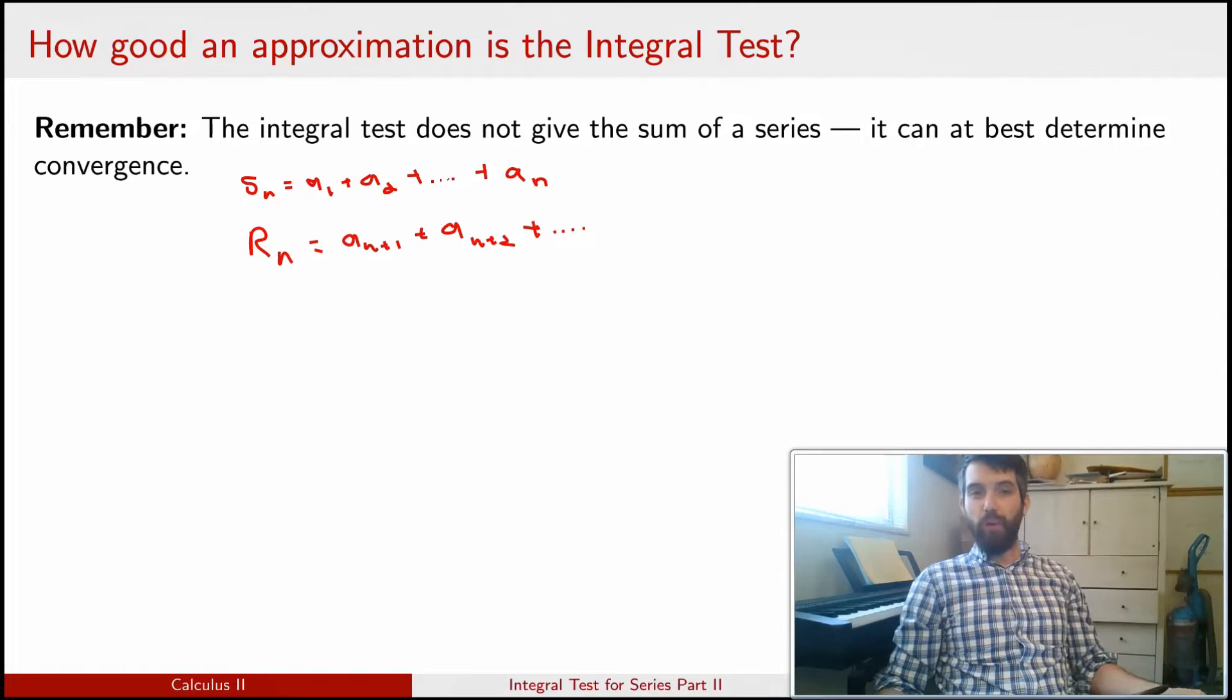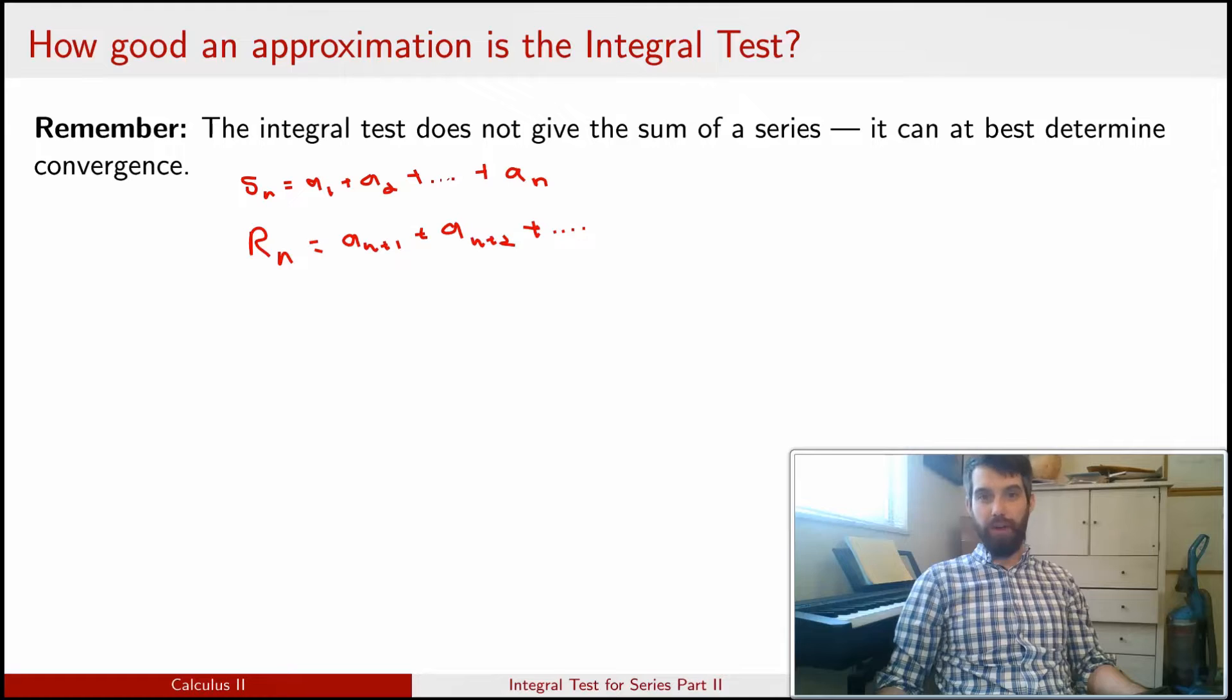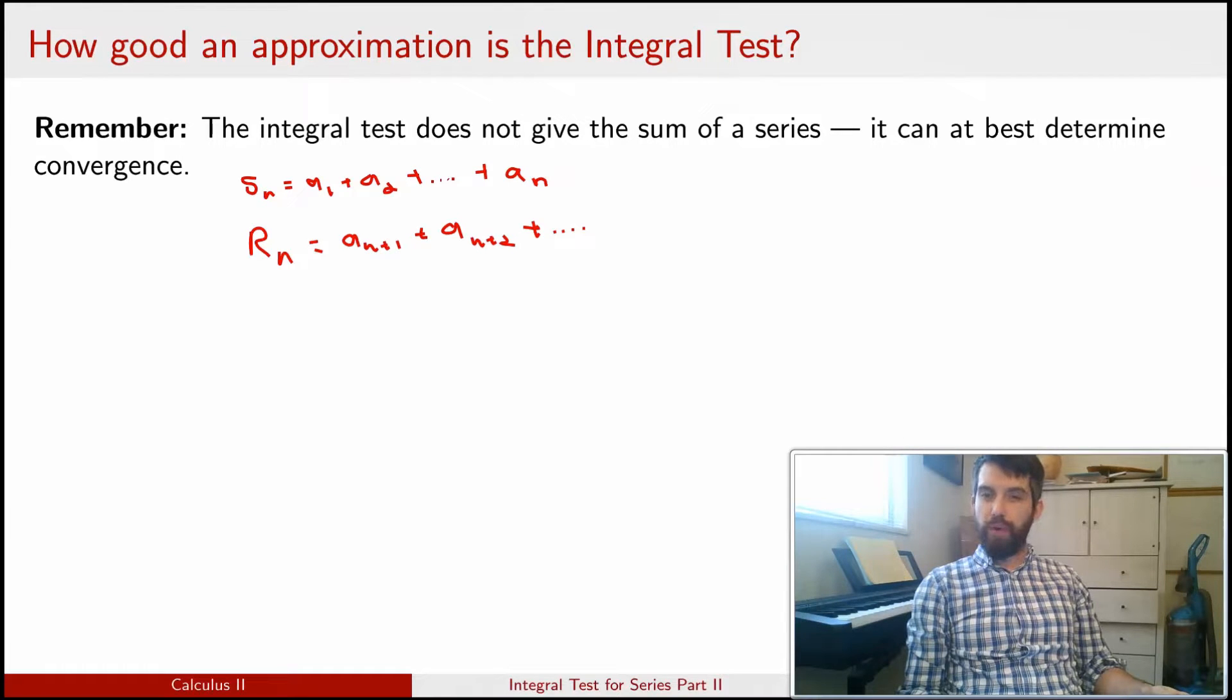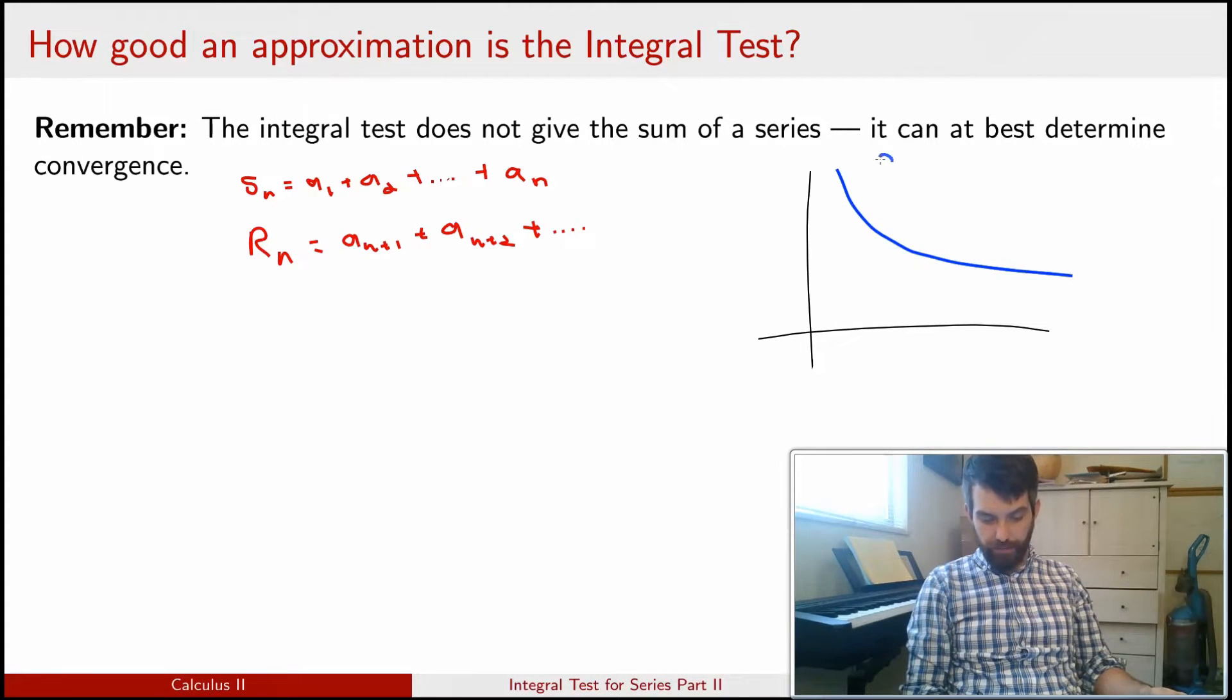The way this might work is, suppose I want to compute the value of a series, I might compute a value like S100 or S1000 or S1 million. And then I want to know how bad is the remainder, how bad is this infinite tail. I'm going to try to represent this as I did with the integral test. I'm going to give myself some axes, I'm going to give some function that's coming down here, this is the function f(x), and I'm imagining that it has the property that f evaluated at n is just going to be equal to all the different an's.